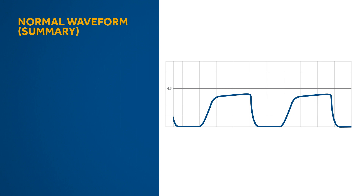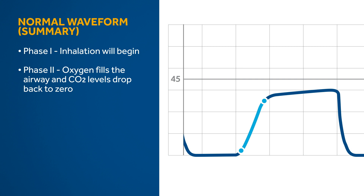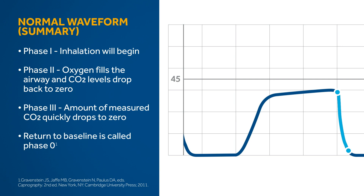To summarize the normal waveform: Phase 1 represents the inspiratory phase of the respiratory cycle. Phase 2 shows the rise in CO2 as dead space ventilation mixes with alveolar gas — this part of ventilation involves the trachea, main stem bronchus, and airways. Phase 3 represents the alveolar plateau, involving most alveolar gas. End-tidal CO2 is measured at the end of expiration, just before inspiration. Finally, Phase 0 represents a rapid sharp downstroke indicating a drop in CO2 back to zero and the beginning of inspiration.